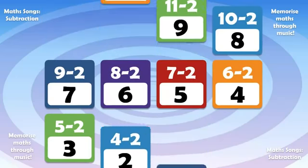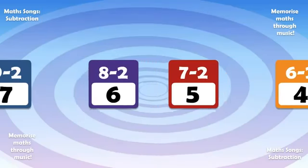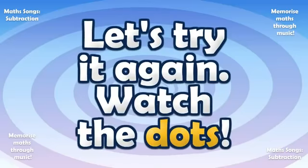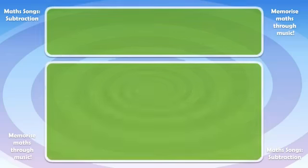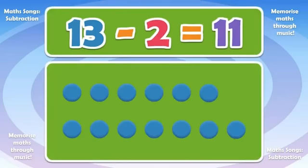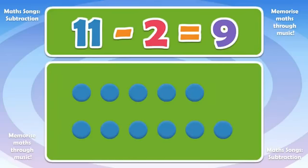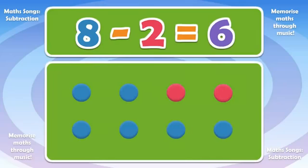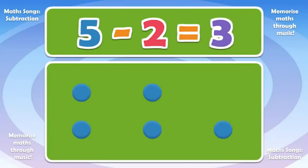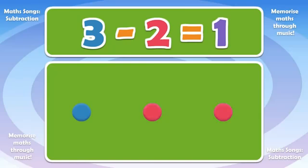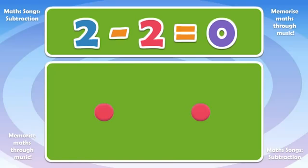Let's try it again, watch the dots. 13 minus 2 is 11, 11 minus 2 is 9, 8 minus 2 is 6, 5 minus 2 is 3, 3 minus 2 is 1, 2 minus 2 is 0.